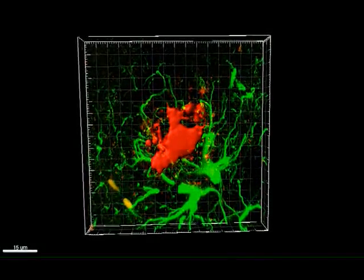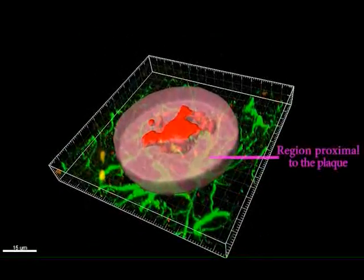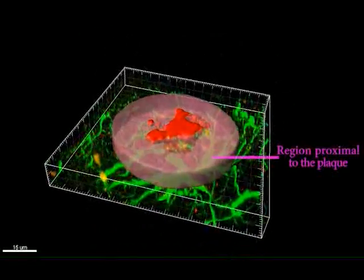Second, the surface function is used to create a masked cylinder, here in pink, with a volume ten times greater than the plaque. This region is considered as proximal to the plaque.